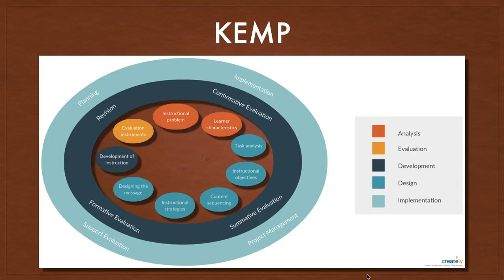The Kemp model at first glance is longer than the other models, but the tasks performed using this model are really the same as they are in the other models — they are simply stated in more detail. This model is also non-sequential, in spite of the list of tasks, which are often numbered for easy reference. Like the other models, this one assumes that evaluation and revision are not stand-alone steps or tasks, but are carried out throughout the process in order to continuously improve design.